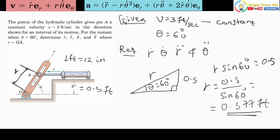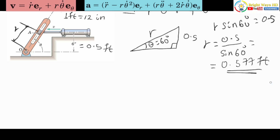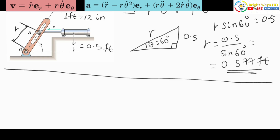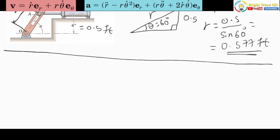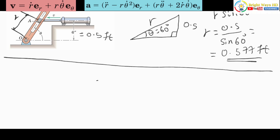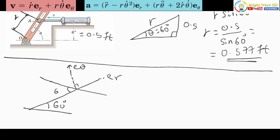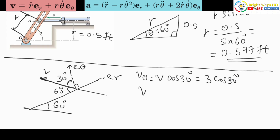The velocity is in the left direction. To evaluate the r and theta components of the velocity, we decompose it into the intended directions: er and the perpendicular eθ direction. From the horizontal, we know the angle is 60 degrees, making the complementary angle 90 minus 60 equals 30 degrees. The theta component of velocity, vθ, equals v times cos 30 degrees, which is 3 times cos 30 degrees.